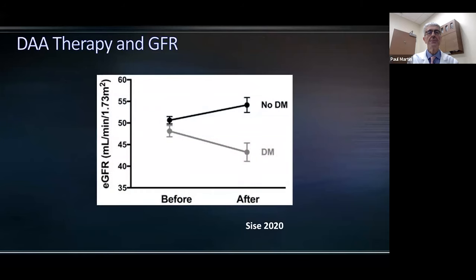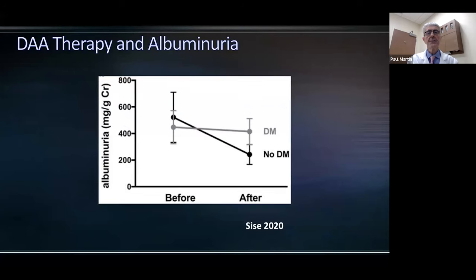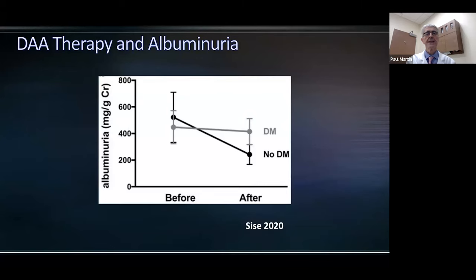From the same paper, this shows the effect of antiviral therapy before and after in terms of GFR. In patients without diabetes mellitus, it appeared to improve or increase the estimated GFR. Similarly, antiviral therapy reduced albuminuria in chronic kidney disease patients without underlying diabetes mellitus. This large and reassuring data shows these regimens are safe and beneficial not only for liver disease but also for renal function.